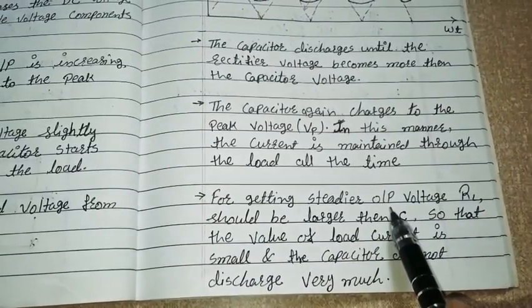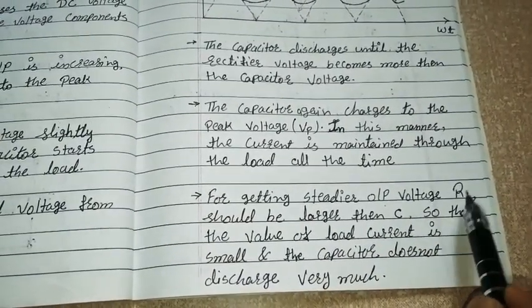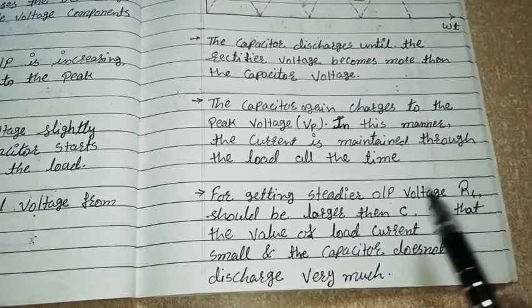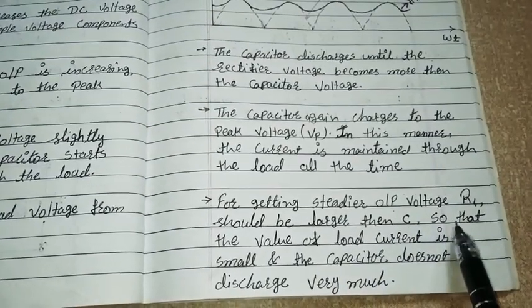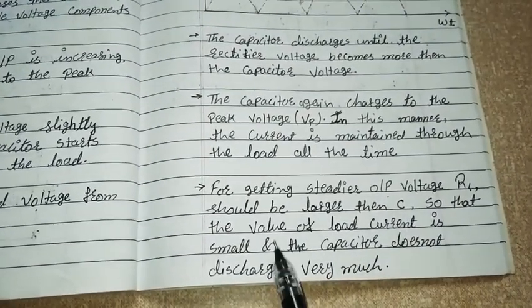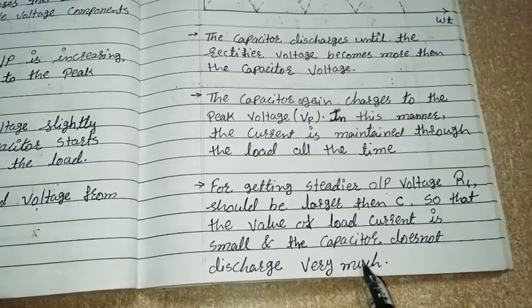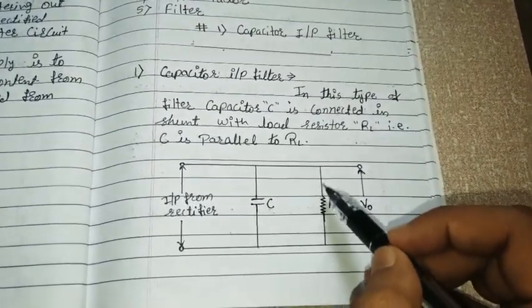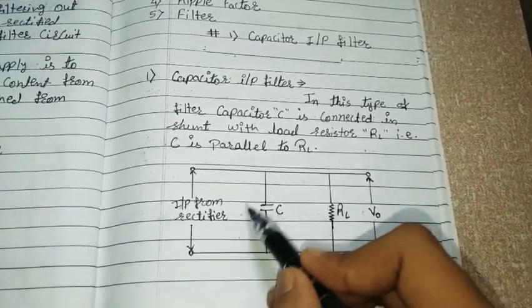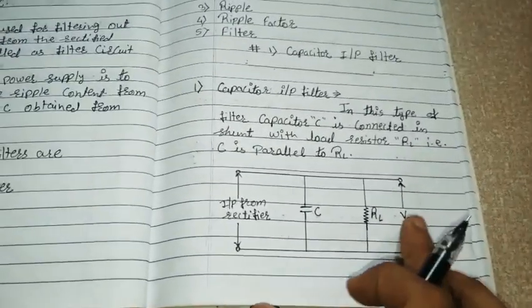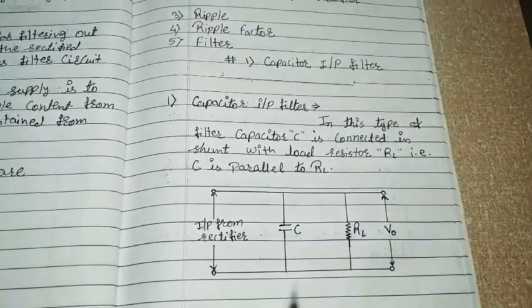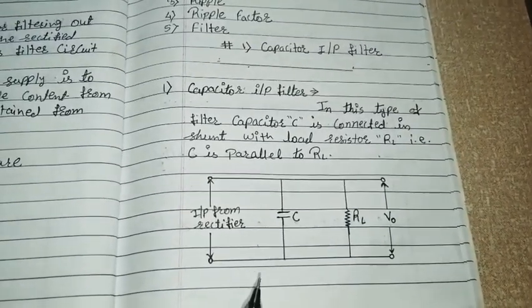For a steadier output voltage, RL should be larger than C, so that the load current is smaller and the capacitor does not discharge very much. If RL is much greater than the capacitor's impedance, then very small current will pass and the capacitor will not discharge quickly. That's all for today's lecture. In the next lecture, we will learn about inductor filters and RC filters. Thank you.